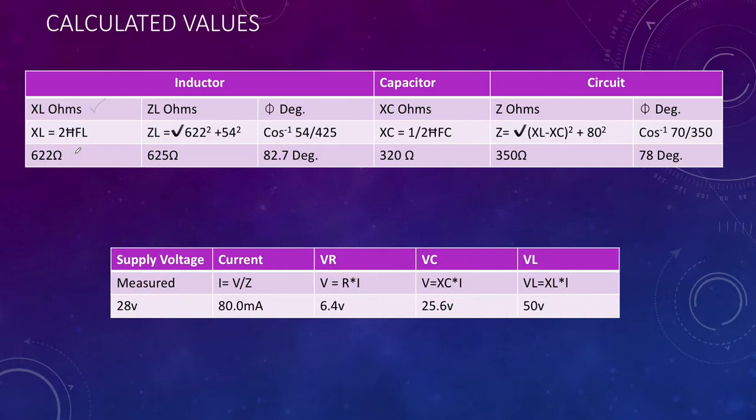The actual Z of the inductor - remembering it's made up of our 622 ohms of inductance and 54 ohms of internal resistance - is square root of 622 squared plus 54 squared. That's just Pythagoras's theorem. We've got an internal Z of 625 ohms, and if we work out that ratio, the inductor is at an angle of about 82 degrees.